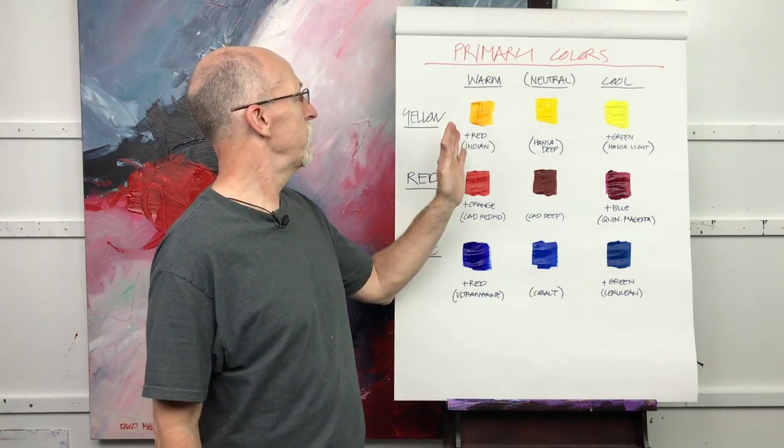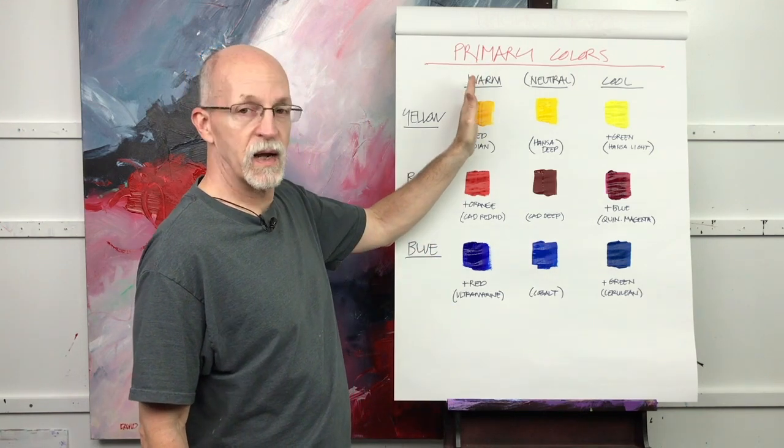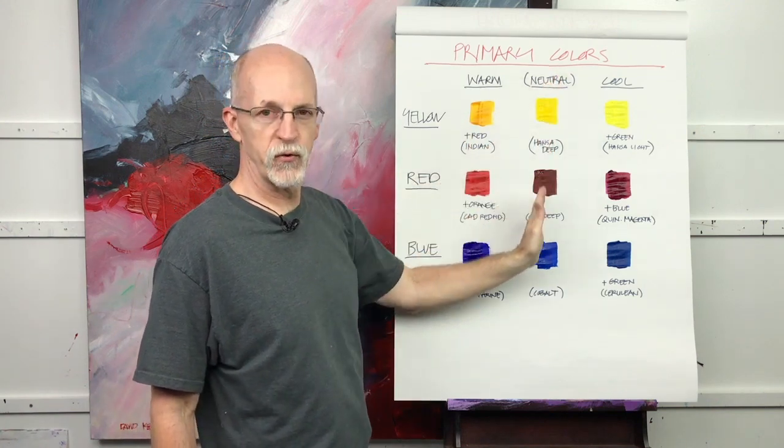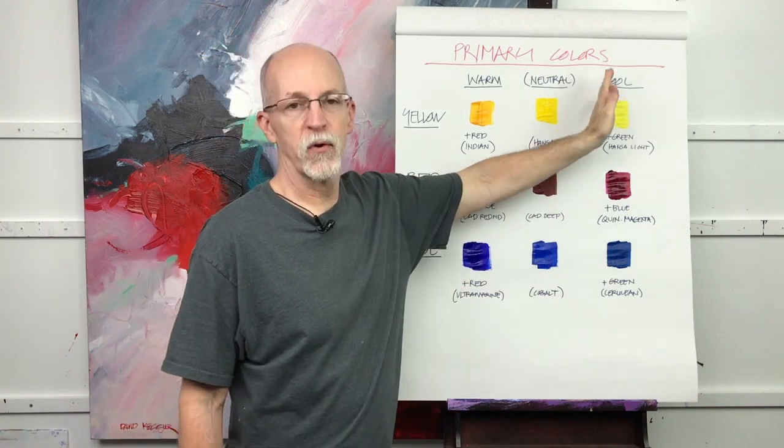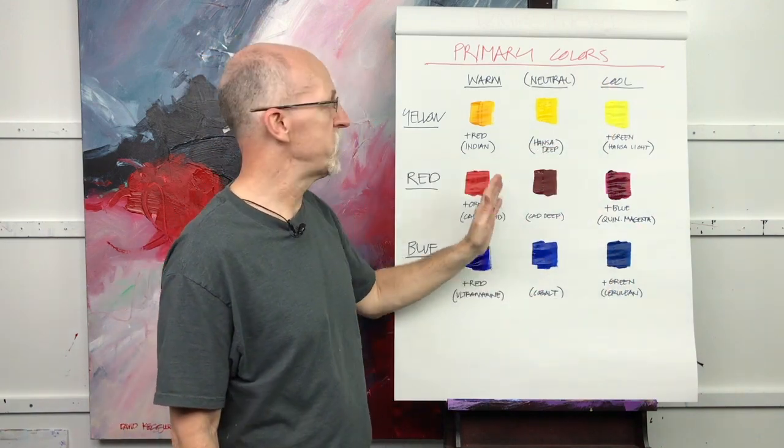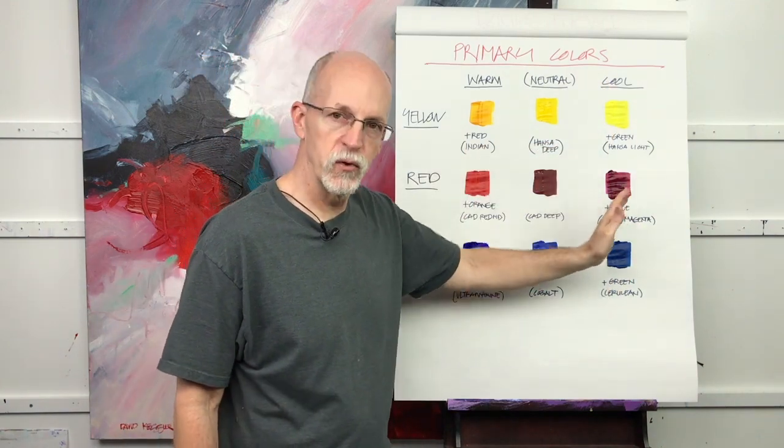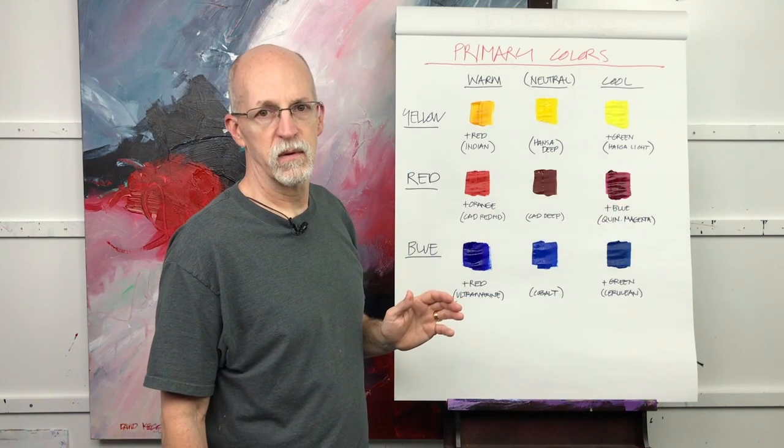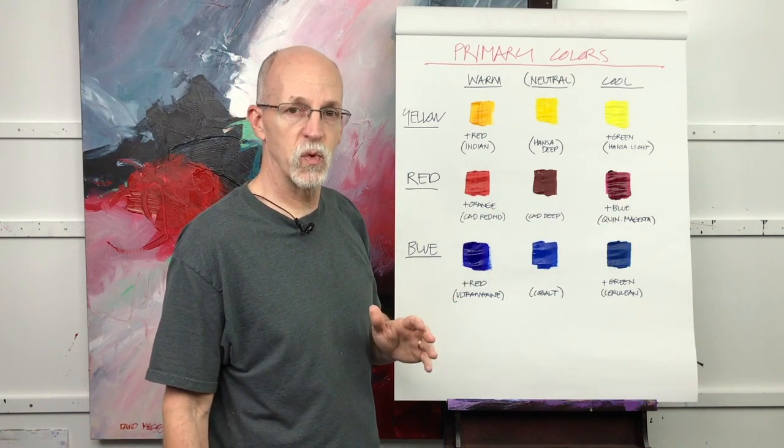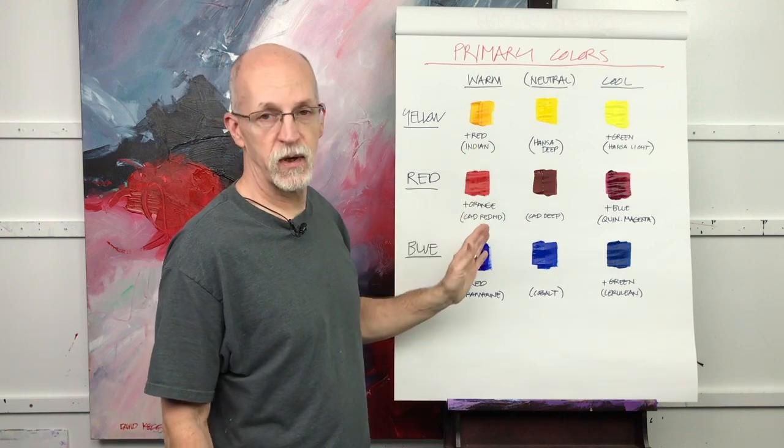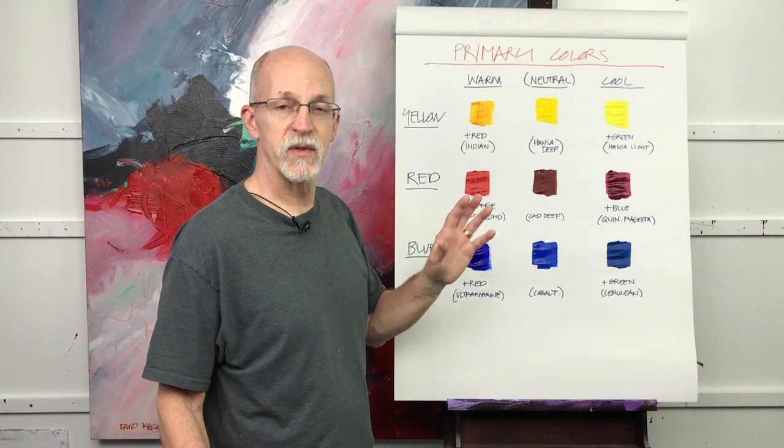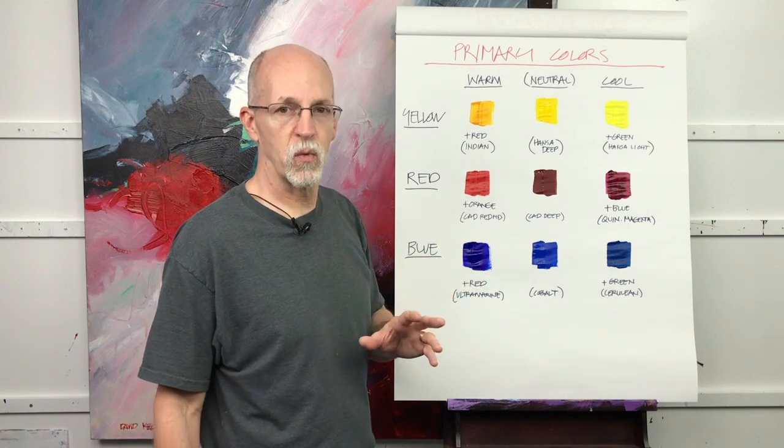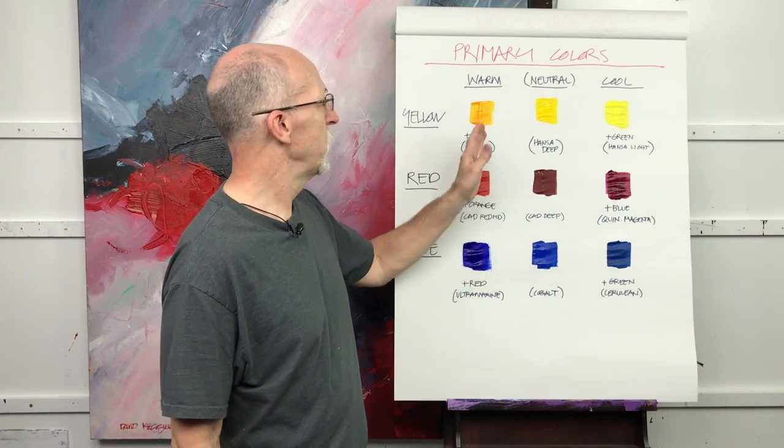I've got a column here for warm colors, one for neutral - which is really the primary colors - and one for cool. So each version has a warm, a neutral, and a cool of the three primaries. These are the particular ones that I use; you may use different colors, but these are warm, neutral, and cool.